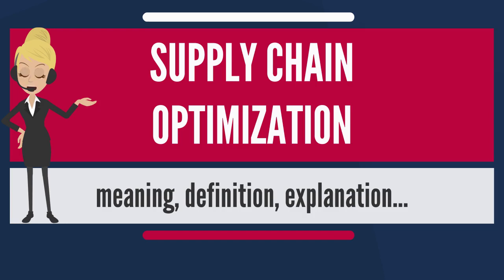Typically, supply chain managers are trying to maximize the profitable operation of their manufacturing and distribution supply chain. This could include measures like maximizing gross margin return on inventory invested, balancing the cost of inventory at all points in the supply chain with availability to the customer, minimizing total operating expenses — transportation, inventory and manufacturing — or maximizing gross profit of products distributed through the supply chain.